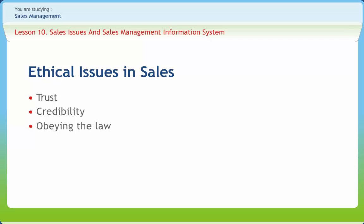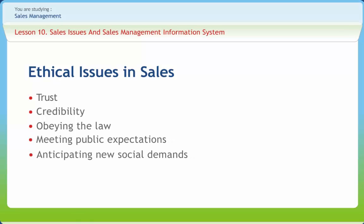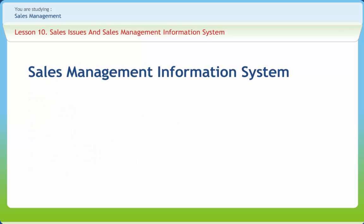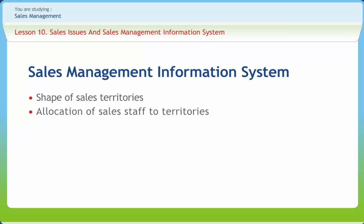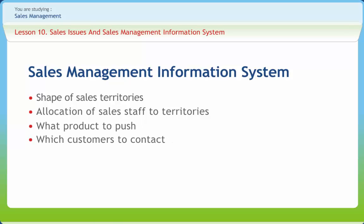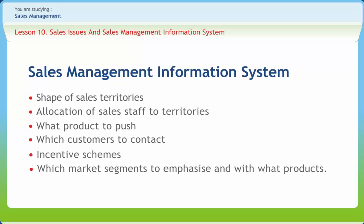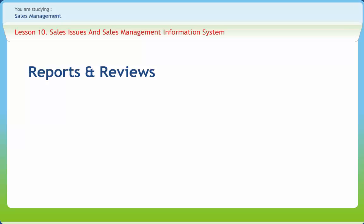The main ethical dilemmas relate to issues of trust, credibility, obeying the law, meeting public expectations, anticipating new social demands, and leading the way. A sales management information system helps in determining the shape of sales territories, allocation of sales staff to territories, deciding what products to push, which customers to contact, incentive schemes, and which market segments to emphasize and with what products.